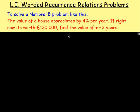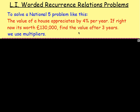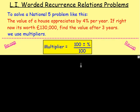To answer that, you could have done it one of two ways. You could work out 4% of the £130,000 and add it on, then work out 4% of that and add it on, then 4% of that and add it on. Or, I imagine most of you did it the quick way using multipliers. Remember, to work out the multiplier because it was going up by 4%, you had 100 add your 4% and then divide by 100 — that's how you found the multiplier.